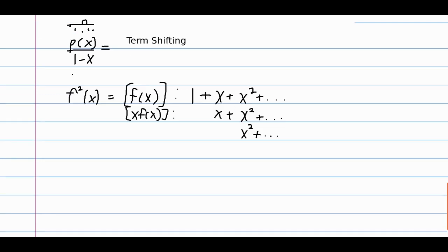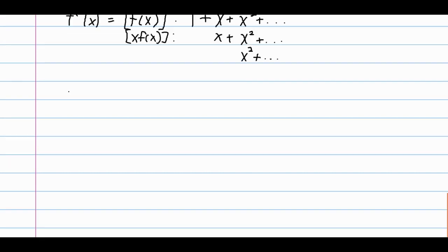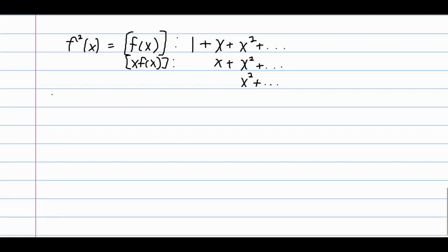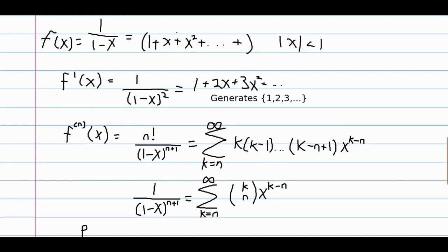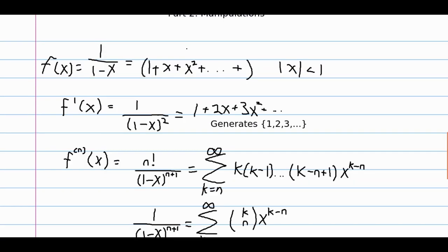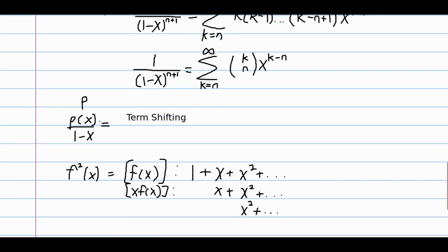Because here, f of x is generating the sequence 1, 1, 1, 1, 1, 1, right? And so the first partial sum is just 1, then we have 1 plus 1, then 1 plus 1 plus 1 — that's what we're getting here. Dividing by 1 minus x, which is multiplying by this infinite sum, generates the partial sums of whatever sequence we have.